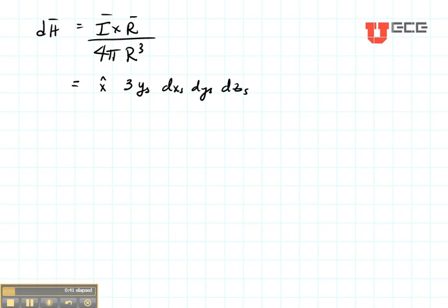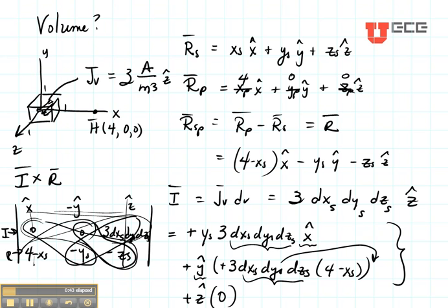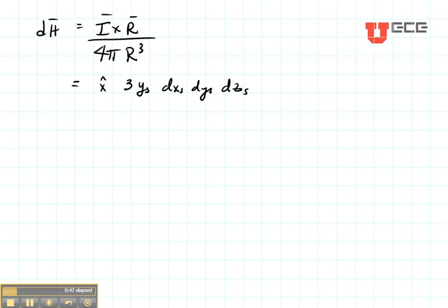Now let's go get the Y term. The Y term is 3 DV times (4 minus XS), DXS, DYS, DZS.